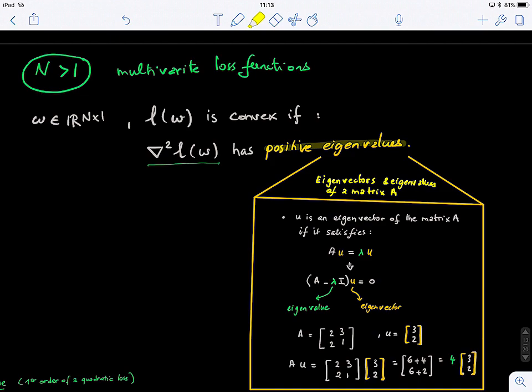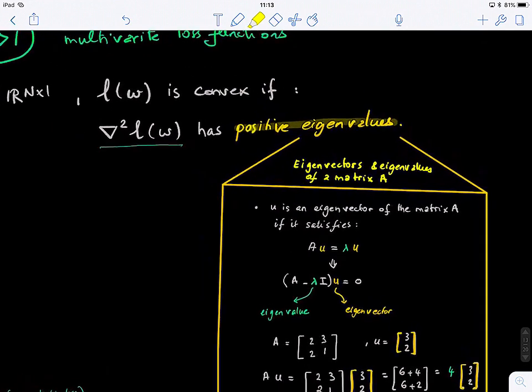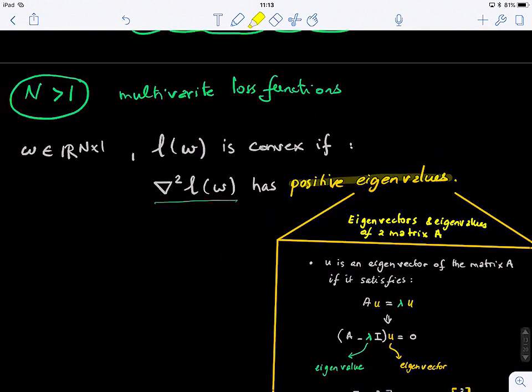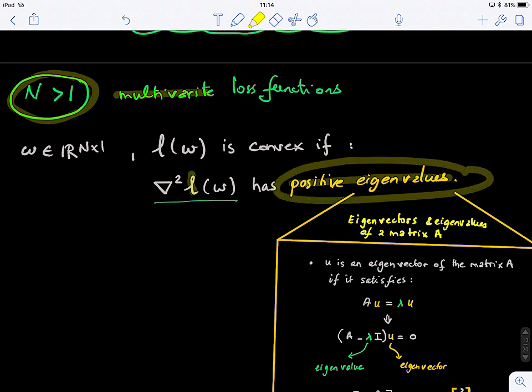To give you an overview, in the one-dimensional case, the second derivative should be positive at that point. That's how we know it's a minimum. But in the n-dimensional case for a multivariate loss function, the Hessian matrix of that function needs to have positive eigenvalues, which means all of them should be positive.